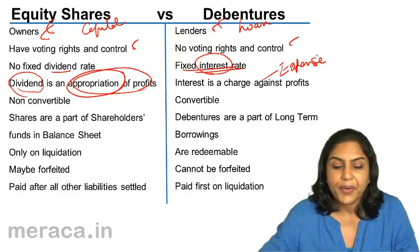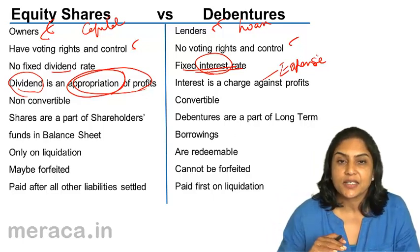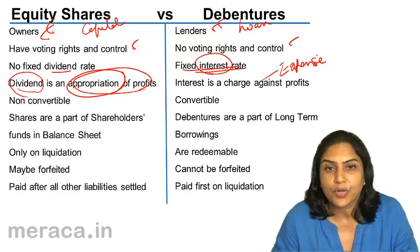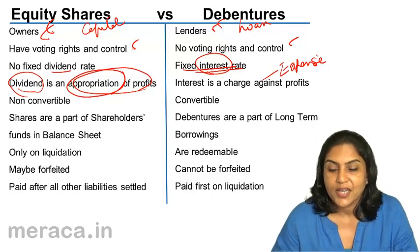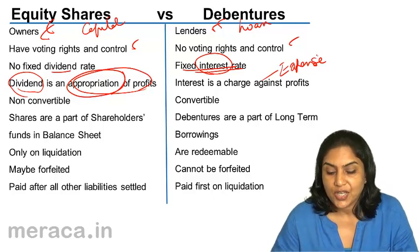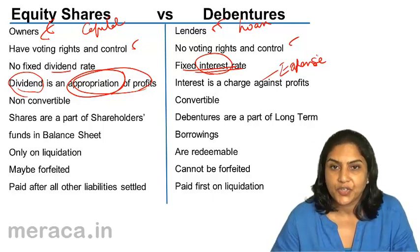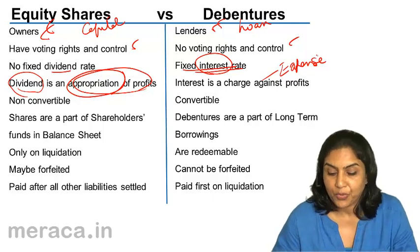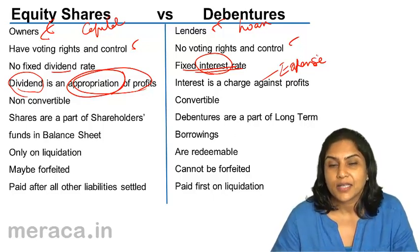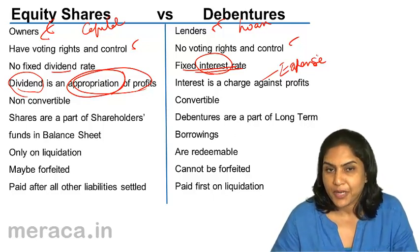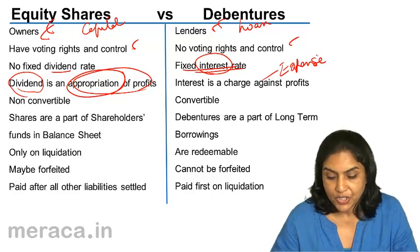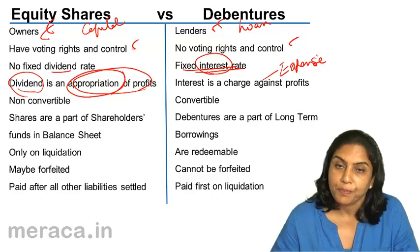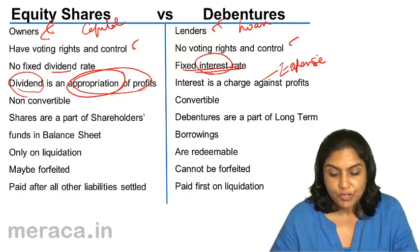Equity shares are not converted to debentures, whereas debentures may be converted into equity shares. We have some kinds of debentures called convertible debentures, which could be converted to shares.